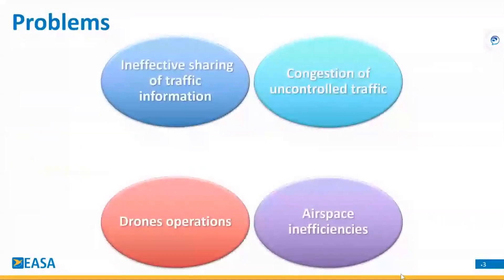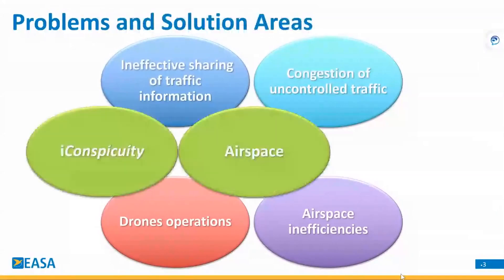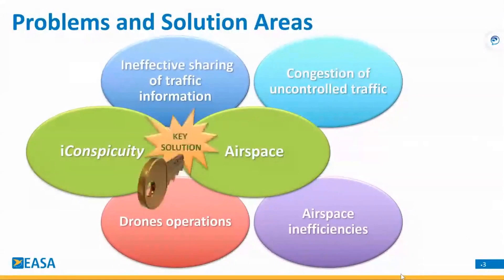Problems identified are ineffective sharing of traffic information between traffic, congestion of uncontrolled traffic, drones' operations developing, and airspace inefficiencies. We see two big elements here that could help to resolve the problem: Iconspicuity and airspace. And the key solution is between the two.